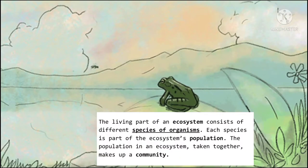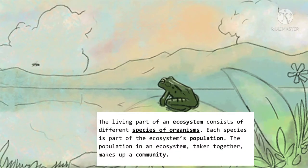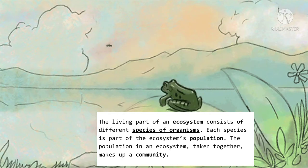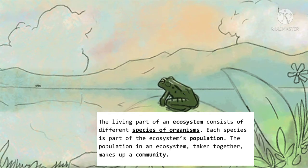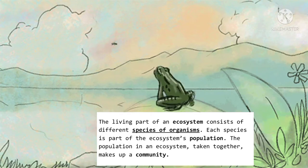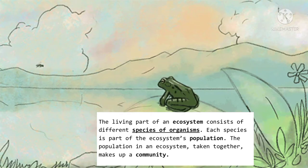The living part of an ecosystem consists of different species of organisms. Each species is part of the ecosystem's population. The population in an ecosystem, taken together, makes up a community.